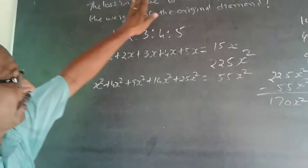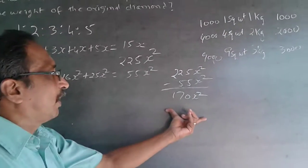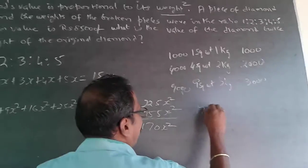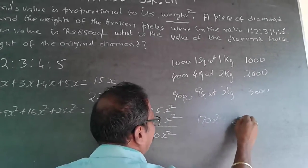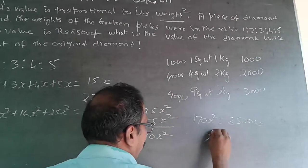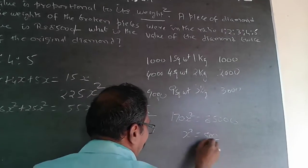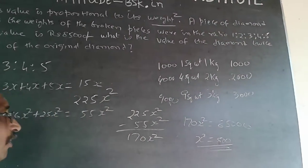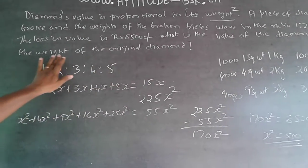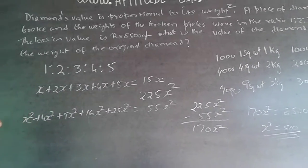They have given the loss in value. Because there is a loss in square weight, there is a loss in value. So 170x² is equal to 85,000. Therefore x² is equal to 500. The question now asks: what is the value of the diamond of twice the weight of the original diamond?